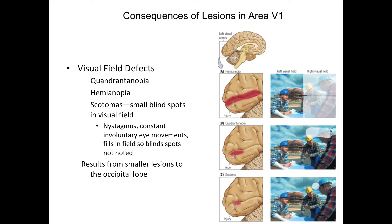Sometimes a very small occipital lobe lesion produces a tiny little circle or small blind spot in your visual field, called a scotoma. What's very interesting is that people are often unaware they have a scotoma, because our eyes constantly make tiny involuntary movements called nystagmus. Because of these movements, the brain fills in the blind spot — so a scotoma is sometimes not perceived, and you still see your whole visual field.